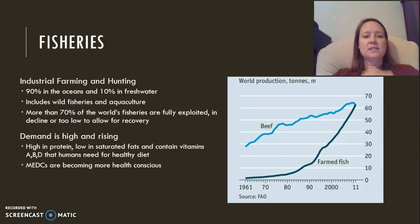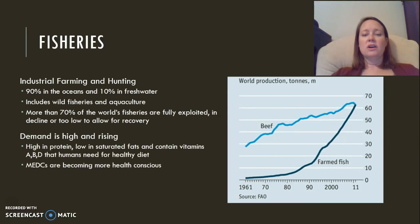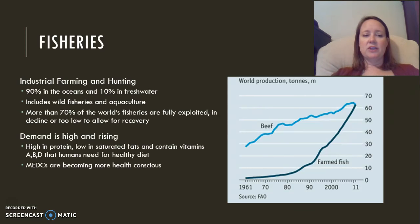Fisheries are areas where we harvest fish. Ninety percent of those are in the oceans; the other ten percent are in freshwater. Some are wild fisheries and some are aquaculture where we raise fish. More than seventy percent of our natural ocean fisheries are fully exploited, meaning numbers are either in steep decline or already too low to recover. Demand is high and rising — fish is high in protein, low in saturated fats, and contains vitamins A, B, and D.